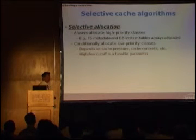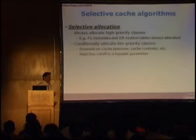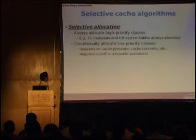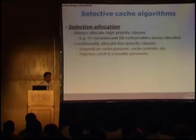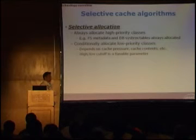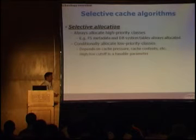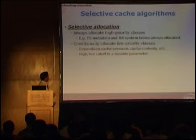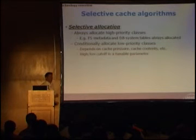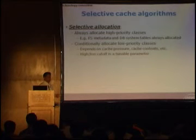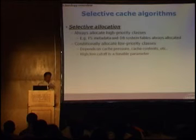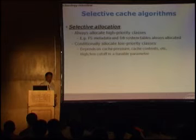To leverage this, we need new caching algorithms. The first is selective allocation: we selectively allocate or not in the cache based on caching priorities. For example, always allocate file system metadata or database system tables regardless of cache pressure, because if those aren't allocated, going to disk is expensive. Some things are conditionally allocated based on system state — if the cache is filling up, fence off lower-priority I/O. The priority information comes from the host OS, so the storage system knows what's low and high priority. The cutoff is a tunable parameter, and we let the storage system make that call because it knows best about its internal resources.